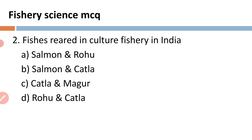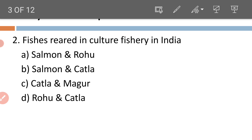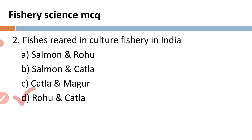Second question: fishes reared in culture fishery in India — A) Salmon and rohu, B) Salmon and katla, C) Katla and magur, D) Rohu and katla. In India, for the culturing of fish species, the major carps are used in freshwater ponds. Rohu and katla are the two well-known fish species generally used for the purpose of culture in our freshwater ponds.